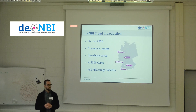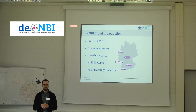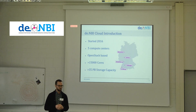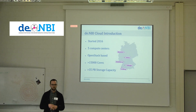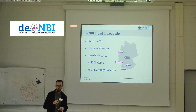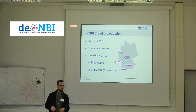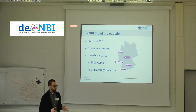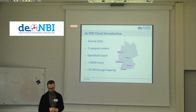In 2016 we started to purchase the first hardware for the de.NBI Cloud, and at the end of last year we went into production. The de.NBI Cloud consists of five compute centers: Bielefeld, Gießen, Heidelberg, Tübingen, and Freiburg. It is a federated cloud, and all compute centers use the same infrastructure-as-a-service system called OpenStack. At the moment we offer more than 15,000 cores and 35 petabytes of storage capacity.